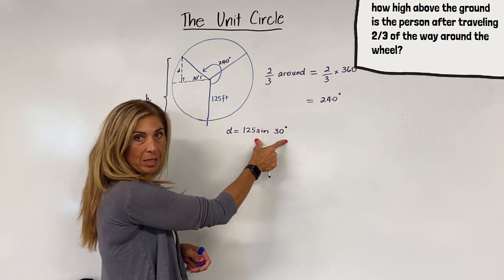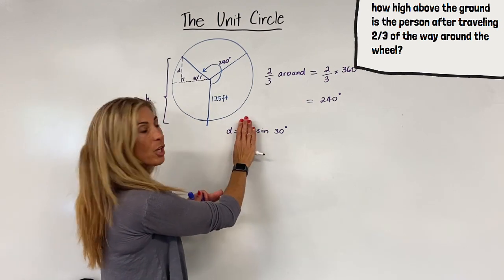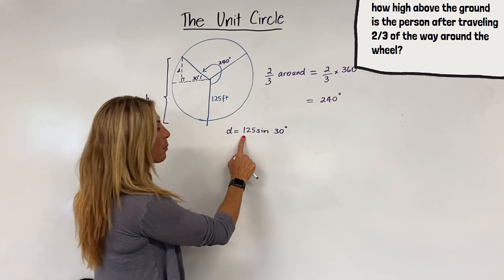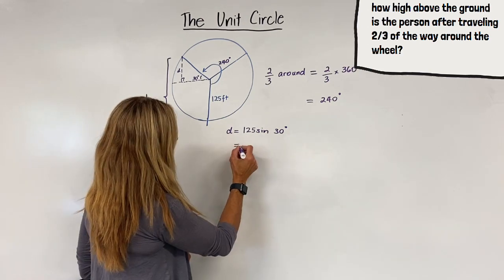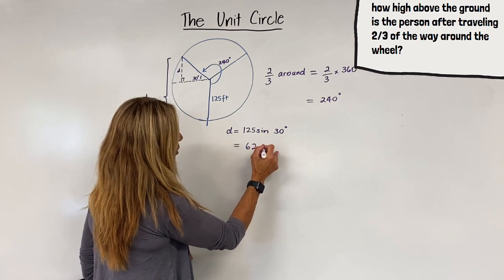We can determine sine of 30 degrees, remembering that this was for a unit circle, which has now been stretched out 125 times. And this gives us 62.5 feet.